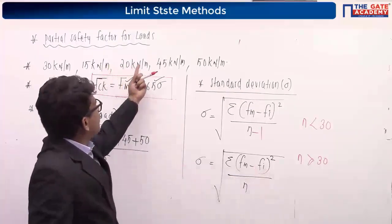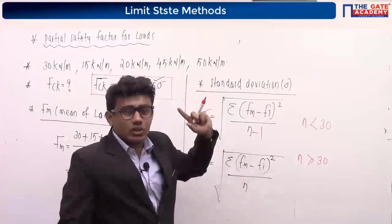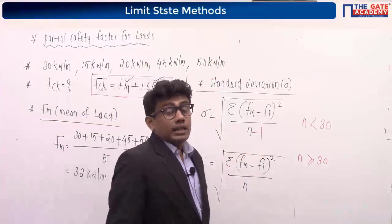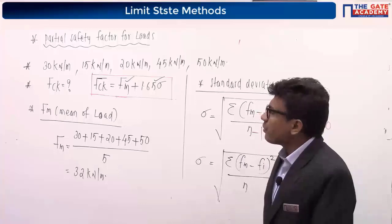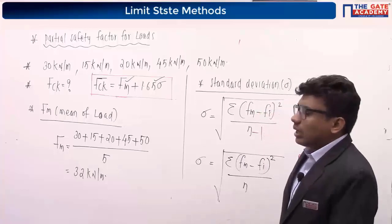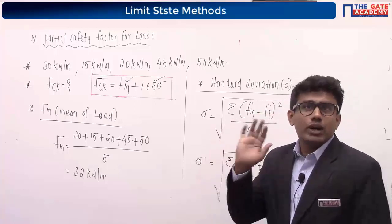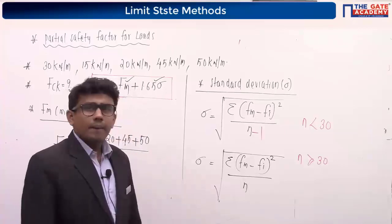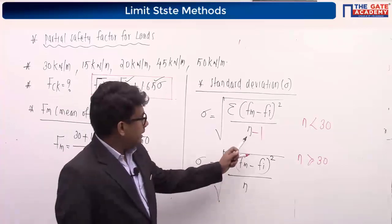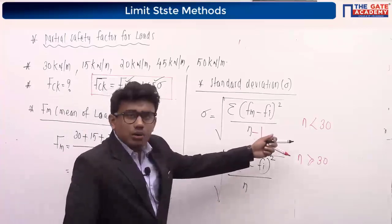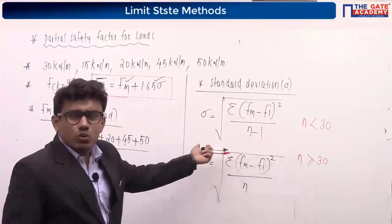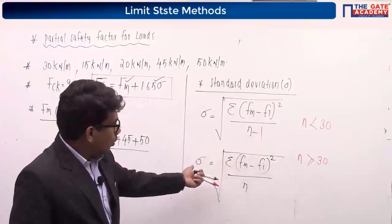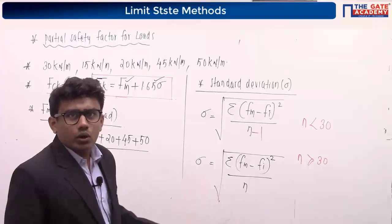If the number of samples is greater than or equal to 30, the equation becomes: sigma = square root of [sum of (Fm minus fi) squared, divided by n]. Here Fm is the mean load and fi represents the individual load values f1, f2, f3, f4, fy, etc.